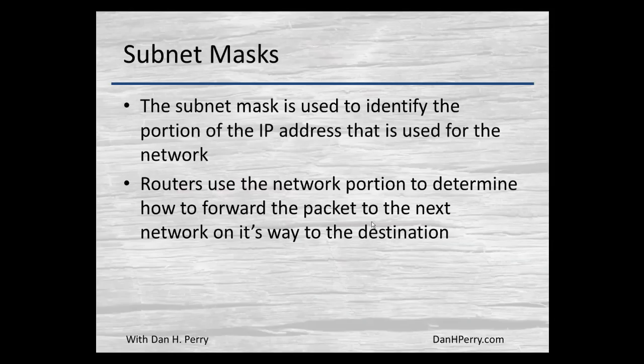A subnet mask is used along with the IP address to identify which part of the IP address is used for the network number — to identify the network — and which part is used for the host portion, or the machine on that network. Routers use the network portion of the IP address to determine how to forward packets, so that as it goes from network to network it eventually reaches its destination.